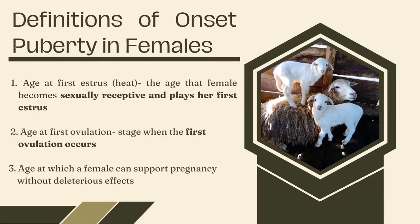The onset of puberty has many definitions in females. Several criteria can be used to define puberty in the female. First is the age at first estrus or heat — the age that a female becomes sexually sensorial and displays her first estrus. The age at first estrus is somewhat easy to determine because females exhibit outward behavioral signals of sexual receptivity, especially in the male presence. The first ovulation normally is not accompanied by behavioral estrus in heifers and ewes — this has been termed silent ovulation. Thus, the age at first estrus may not reflect the accurate acquisition of puberty.